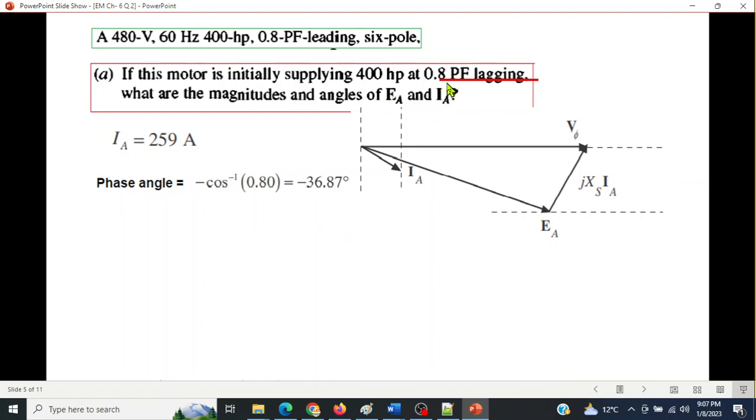So we have found the magnitude of Ia. Now we need to find its angle. Now it has 0.8 power factor lagging. So lagging, our phase angle will be then negative for lagging, negative cos inverse of power factor and the angle will be minus 36.87 degrees. So now we can write in terms of a phasor, Ia phasor will be the magnitude 259 ampere and the phase angle minus 36.87 degrees. So Ia phasor known.